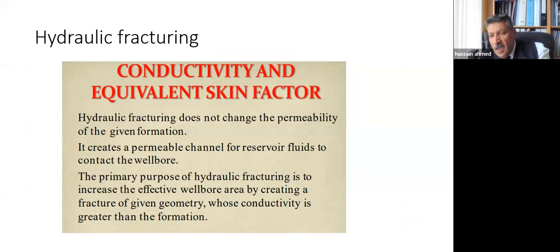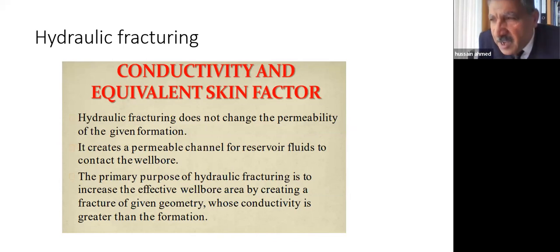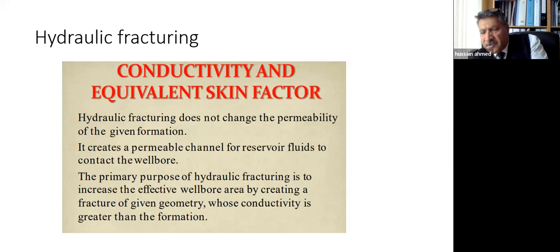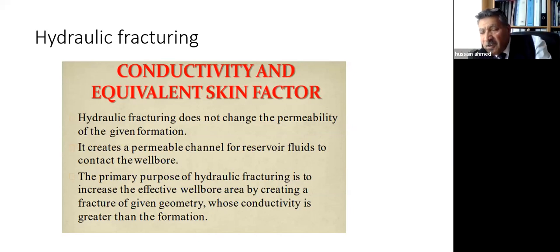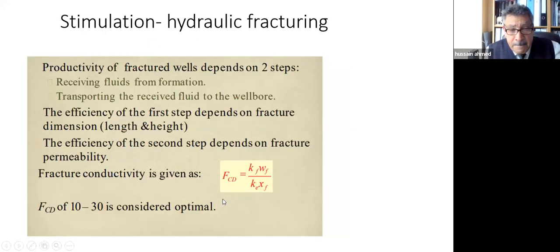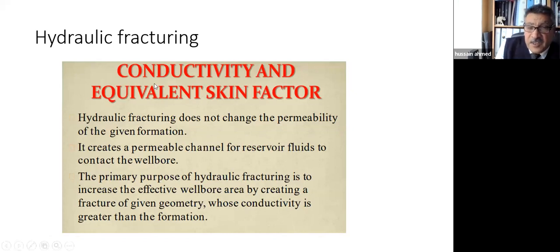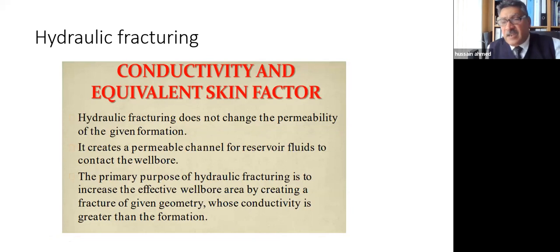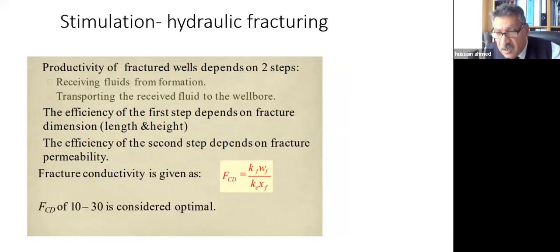Conductivity is the ability of the rocks to allow fluid to flow. Before fracturing you have very tight rocks with very small permeability. After fracturing you make it very conductive because the fracture has about one thousand millidarcies. You can calculate conductivity using the dimensionless fracture conductivity equation FCD = (kf × wf) / (ke × xf), where kf is fracture permeability, wf is fracture width, ke is the original reservoir permeability, and xf is fracture half-length.